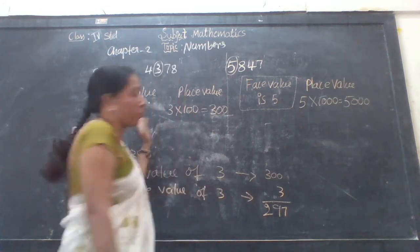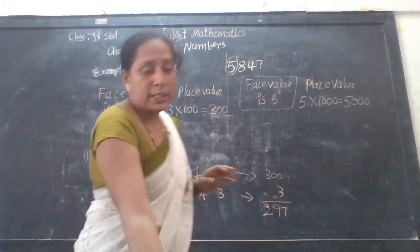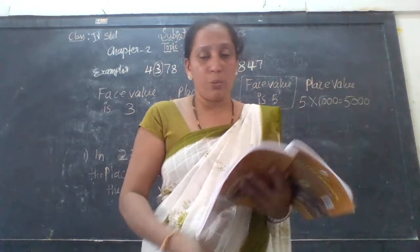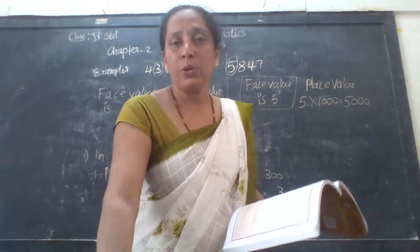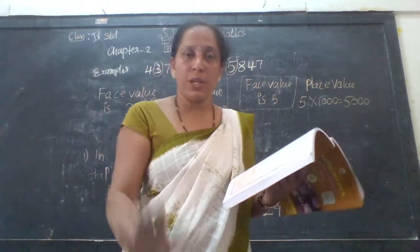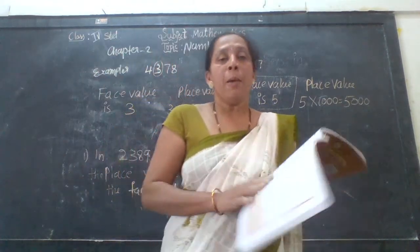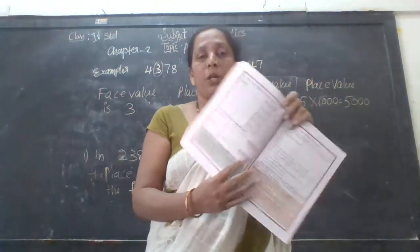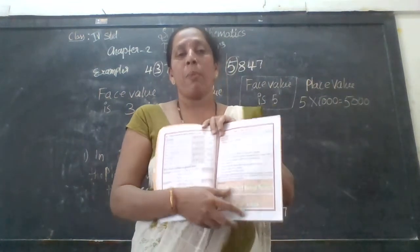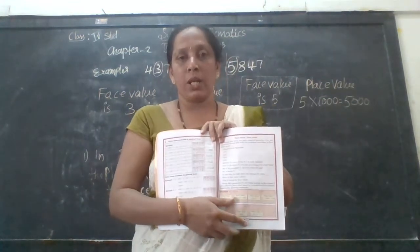Like that, we have to find the place value. We first identify the digit, then find its position in the number, and that gives us the place value.